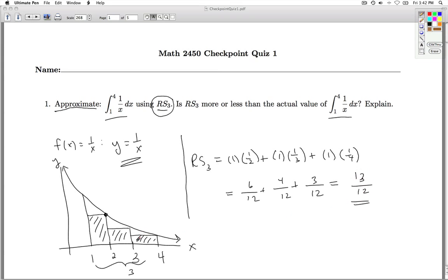And as we mentioned before, this estimate is less than the actual value of the integral because you can see we're missing some area. And so that's number one.